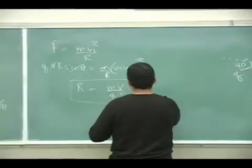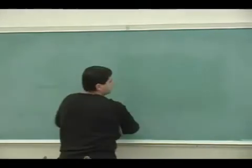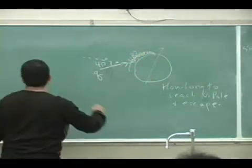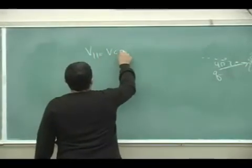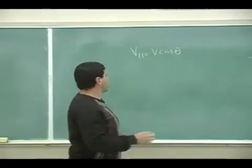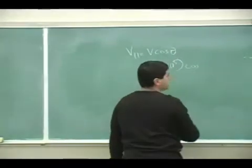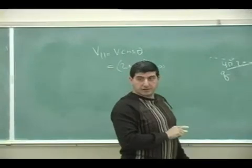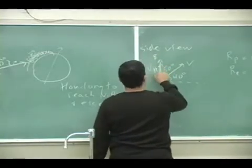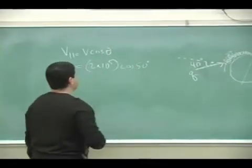So how do we find that? Well, the velocity that's not going to be affected is V parallel, right? V cosine theta. So what is that equal to? 2 times 10 to the fifth times cosine of the 50, right? Not cosine of 40. It's cosine of 50 because it's this one right here. V parallel, and that's just going to go along the B field.